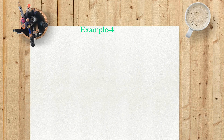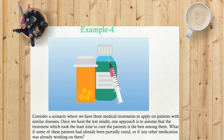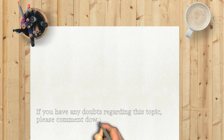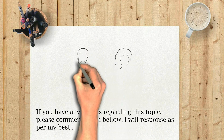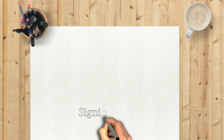Example 4: Consider a scenario where we have three medical treatments to apply on patients with similar diseases. Once we have the test results, one approach is to assume that the treatment which took the least time to cure the patients is the best among them. But what if some of these patients had already been partially cured, or if any other medication was already working on them? If you have any doubts regarding this topic, please comment down below and I will respond as best I can.